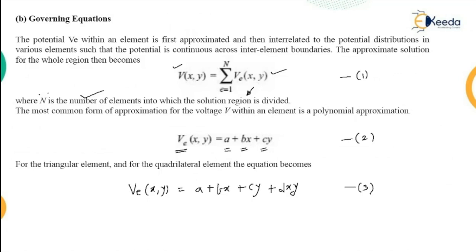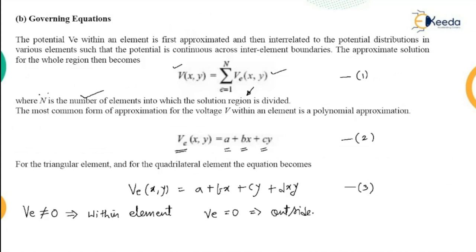The potential VE is not zero within the element, but it is zero outside the element. In view of the fact that the quadrilateral elements are non-conforming elements, as shown in the previous slide, now consider a typical triangular element.